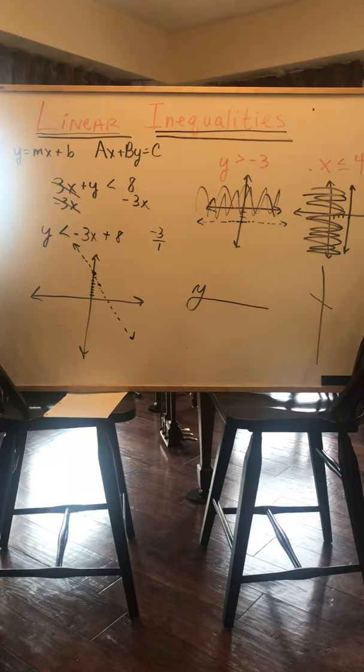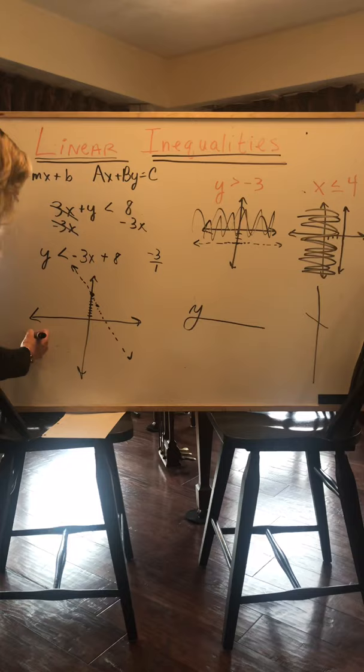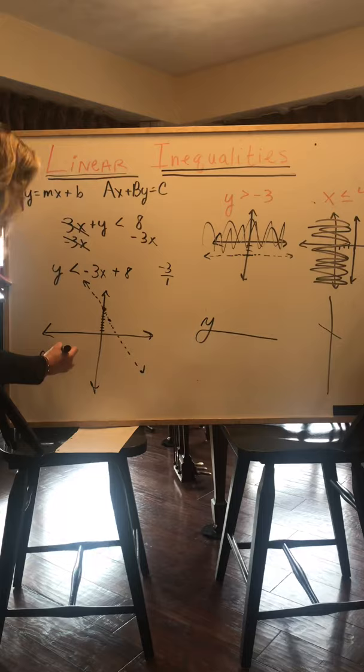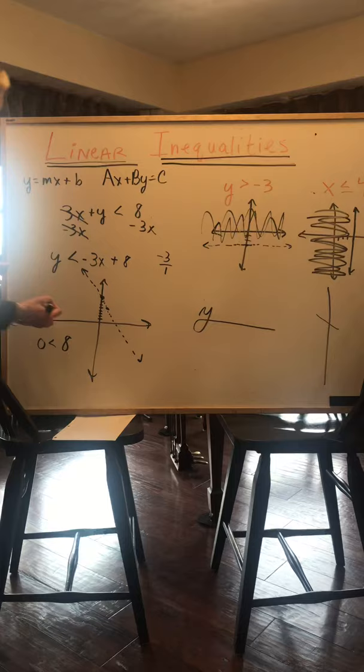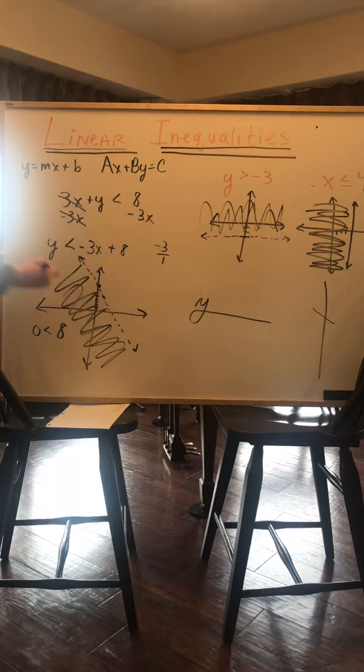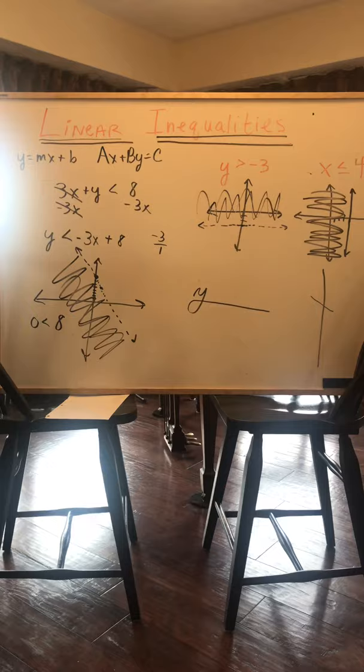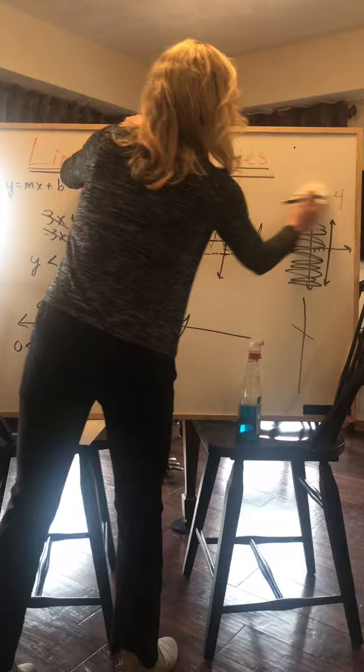And by now you should realize I'm going to test 0, 0. So if y is 0 less than, 0 times anything is 0 plus 8, that would be 8. Is 0 less than 8? Yes it is. It's true. So I shade towards the point I picked.